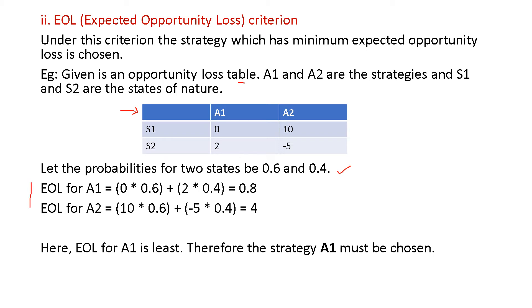EOL for A1: 0 into 0.6 plus 2 into 0.4, which gives 0.8. EOL for A2: 10 into 0.6 plus (-5) into 0.4, which gives 4. Here we want the least value, and A1 is least.